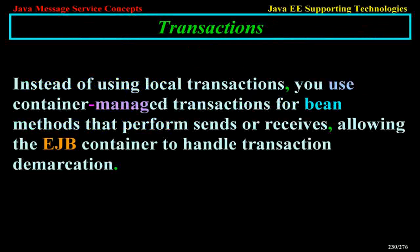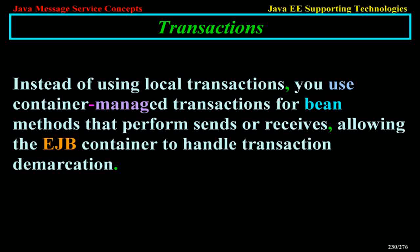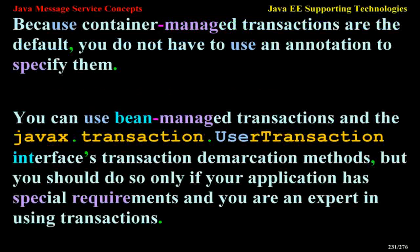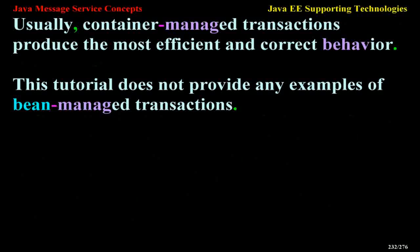Transactions in Java EE Applications. Instead of using local transactions, use container-managed transactions for bean methods that perform sends or receives, allowing the EJB container to handle transaction demarcation. Because container-managed transactions are the default, you do not have to use an annotation to specify them. You can use bean-managed transactions and the javax.transaction.UserTransaction interface's transaction demarcation methods, but you should do so only if your application has special requirements and you are an expert in using transactions. Usually, container-managed transactions produce the most efficient and correct behavior.